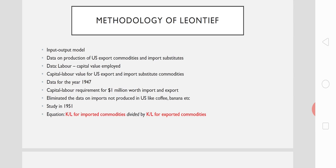Similarly, he collected the capital-labor requirements for the production of import substitutes rather than import commodities directly, because data on capital requirements of the production of import commodities outside the United States were not available. So Leontief used the data of capital-labor requirements of import substitutes in the United States. For example, rather than using input requirements of textile commodities in India, Leontief collected the input requirements of textile production in the United States itself — these are the import substitute commodities. He then used the capital-labor ratio for imported and exported commodities.